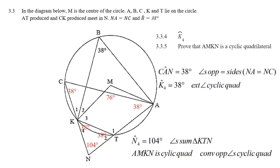So, that's why we can say A, M, K, N is a cyclic quad, because we know N is 104 degrees because of angle summing in triangle K, N, T.